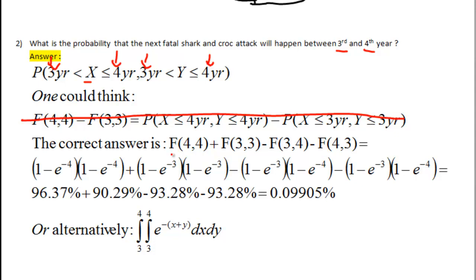We have to apply something more complex. The correct answer for the questions which asks for the joint probability of two random variables between two values, like here, i.e., 3 and 4, is the CDF of 4 and 4, plus the CDF of 3 and 3, minus the CDF of 3 and 4, minus the CDF of 4 and 3.